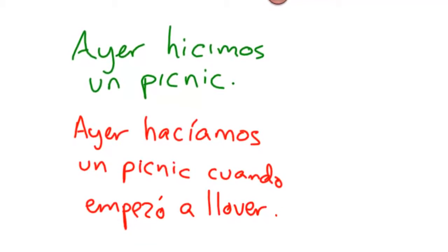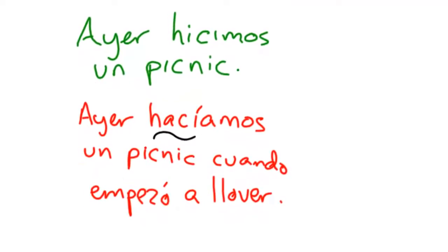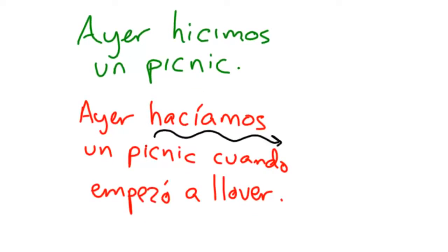So in this case, we've got something that was going on in a situation. We were having a picnic. So that was something in progress. That's going to be imperfect. You recognize that's an imperfect ending? Something that was going on when BAM! Preterite action. Empezó a llover.